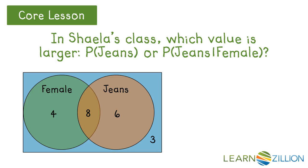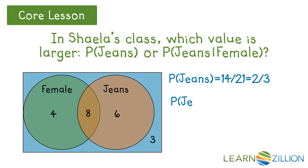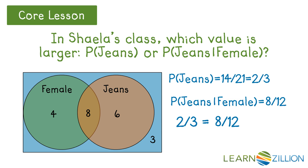Looking at the same class again: which value is larger, the probability of someone wearing jeans or the probability of someone wearing jeans knowing that they're female? These two are independent, as the previous slide showed. The probability of wearing jeans is 14 over 21. The probability of wearing jeans given female: of the 12 females, 8 are wearing jeans — that's 8 over 12. These two fractions are the same.